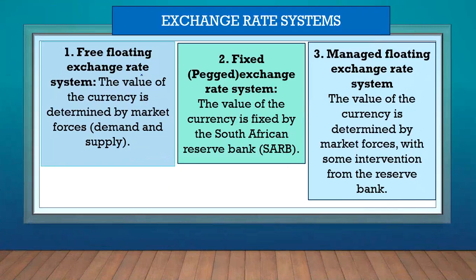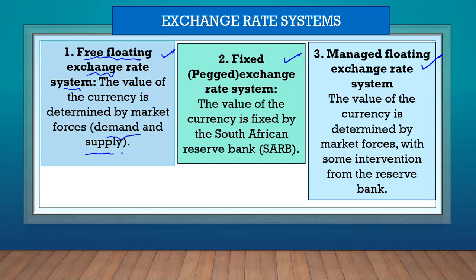Again, a recap from part 1: we learned that there are three exchange rate systems — the free floating, the fixed or pegged exchange rate system, and the managed floating exchange rate system. We will only focus on number one, the free floating exchange rate system. Under this system, the value of the currency is determined by demand and supply.